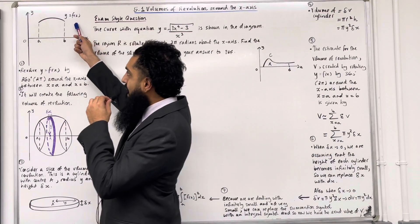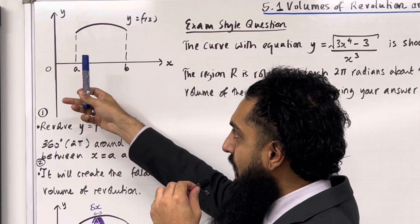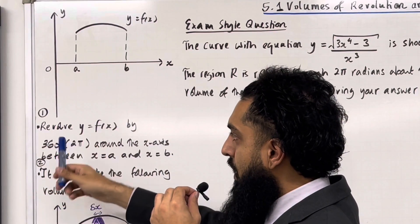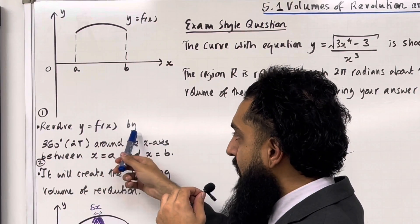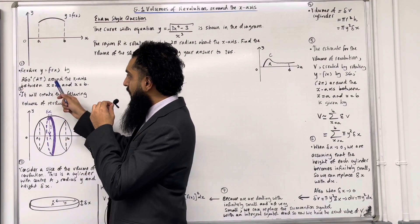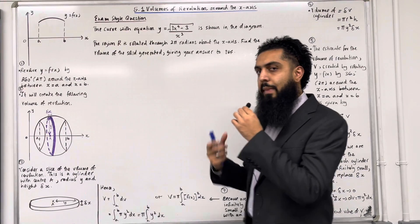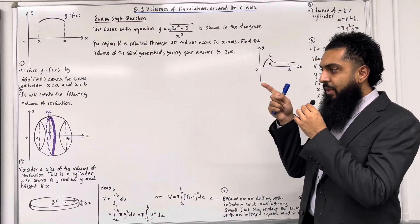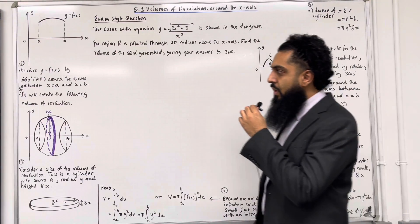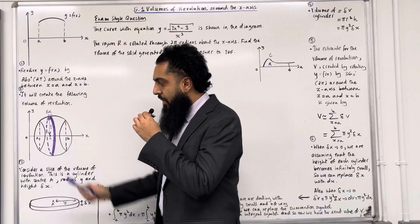Consider the curve y equals f of x. We have an area bounded by y equals f of x, the line x equals a, the line x equals b, and the positive x-axis. Step number 1: revolve y equals f of x by 360 degrees, which is equivalent to 2 pi radians, around the x-axis between x equals a and x equals b. So imagine the curve y equals f of x spinning around the x-axis 360 degrees. This leads on to step number 2 — it will create the following volume of revolution.